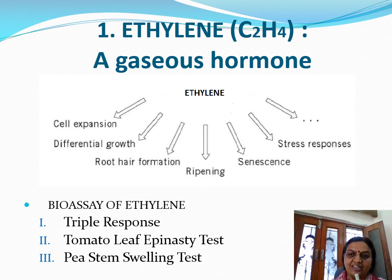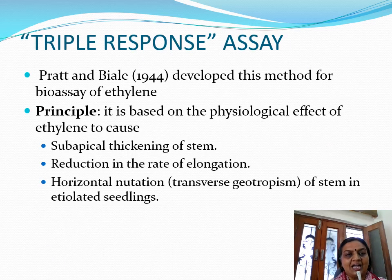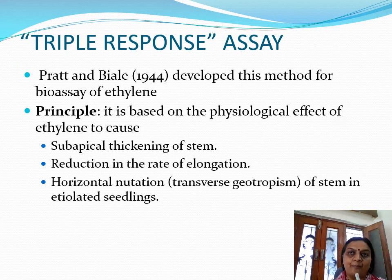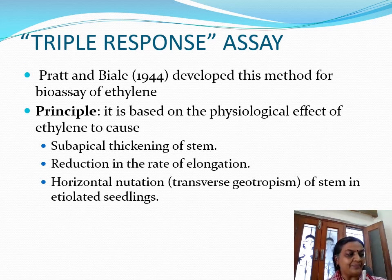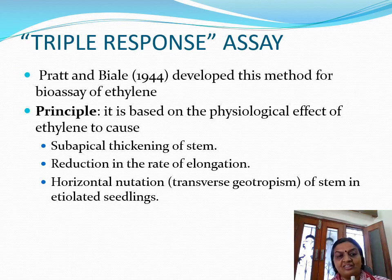The much talked-about bioassays for ethylene are the triple response, the tomato leaf epinasty test, and the pea-stem swelling test. The principle of the triple response assay is that under dark conditions, more ethylene is diffused from the plant, and this ethylene affects the orientation of cellulose microfibrils in the growing, expanding, elongating cells. It is based on this principle.